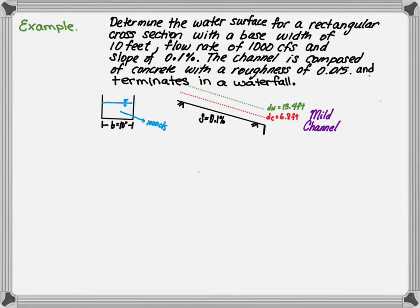Hi everyone, this is Seema again. I want to walk you through a direct step example. Determine the water surface for a rectangular cross-section with a base width of 10 feet, a flow rate of a thousand CFS, and a slope of 0.1%. The channel is composed of concrete with a roughness of 0.015 and it terminates in a waterfall.